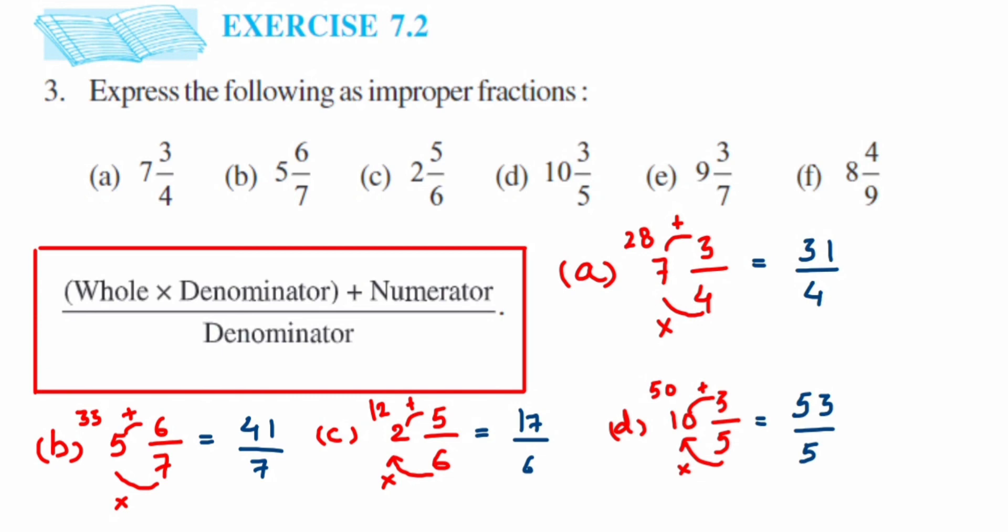Next we have e, which is 9 3/7. First multiply 7 times 9, which is 63. Now 63, then add it with 3. 63 plus 3 is 66. So this is equal to 66/7.